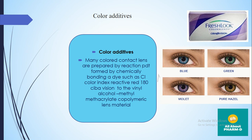Nowadays, colored lenses are also available in addition to transparent lenses, with a fresh look offered by many companies. Colors are achieved by a reaction product formed by chemically bonding a dye — for example, Color Index Reactive Red 180 by CIBA Vision — bonded to a vinyl alcohol methyl acrylate co-polymeric lens. Available colors include blue, green, violet, hazel, and others.